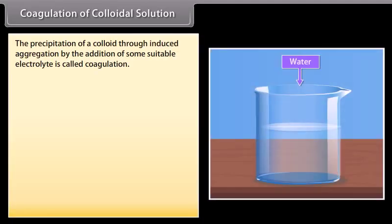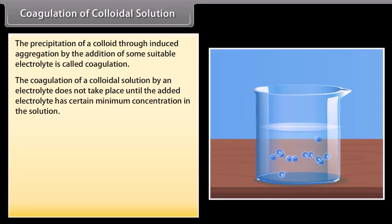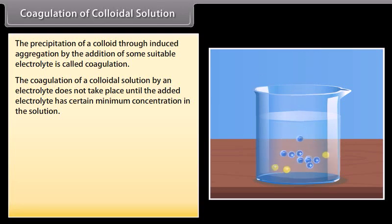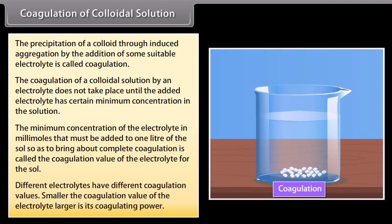The precipitation of a colloid through induced aggregation by the addition of a suitable electrolyte is called coagulation. Coagulation does not occur until the added electrolyte reaches a certain minimum concentration. The minimum concentration of electrolyte in millimoles that must be added to 1 liter of the sol to bring about complete coagulation is called the coagulation value; different electrolytes have different coagulation values, and the smaller the coagulation value, the larger the coagulating power.